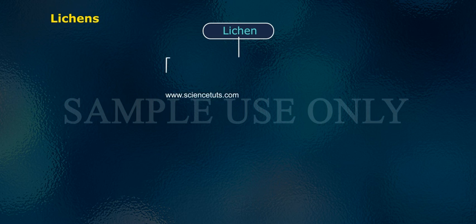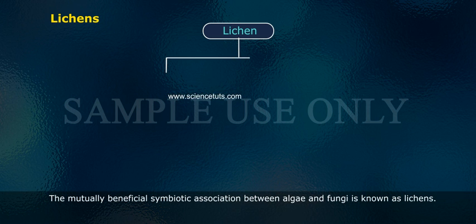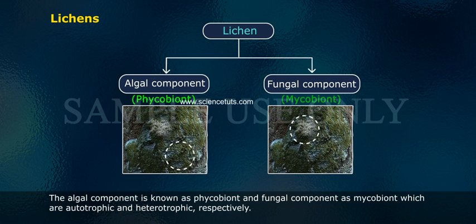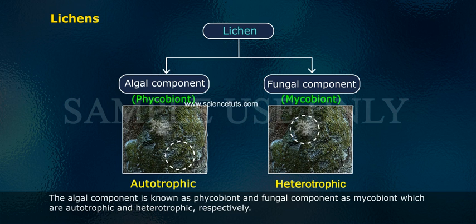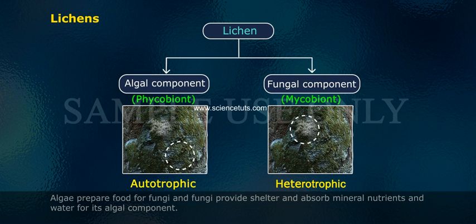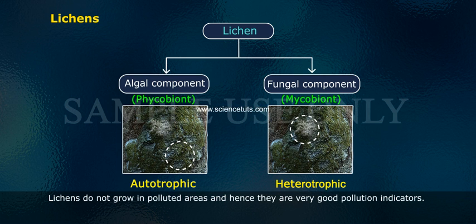The mutually beneficial symbiotic association between algae and fungi is known as lichens. The algal component is known as phycobiont and the fungal component as mycobiont, which are autotrophic and heterotrophic respectively. Algae prepare food for fungi, and fungi provide shelter and absorb mineral nutrients and water for the algal component. Lichens do not grow in polluted areas and hence are very good pollution indicators.